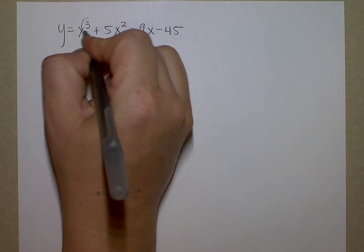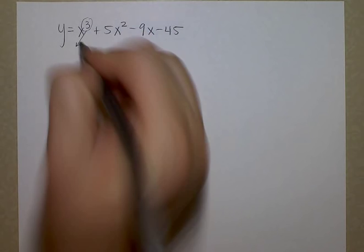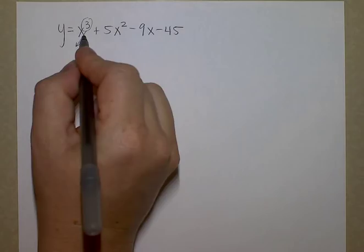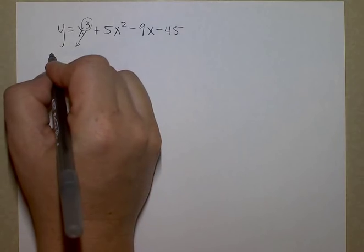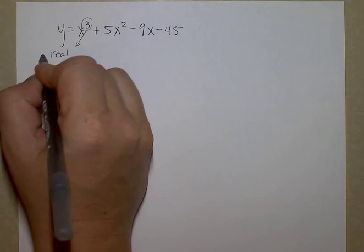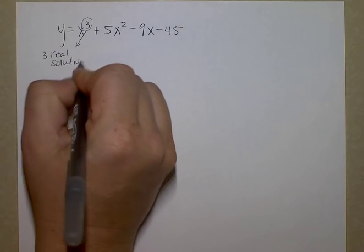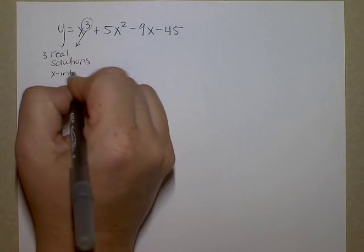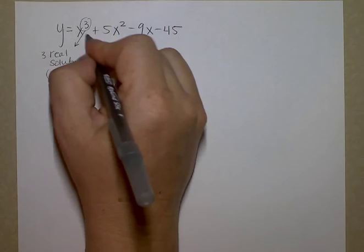The first part asks you to algebraically identify all of the solutions. Now let's just talk about the solutions first of all. Before I even know what they are, I know that there could be a maximum possible of three real solutions. That means three x-intercepts.